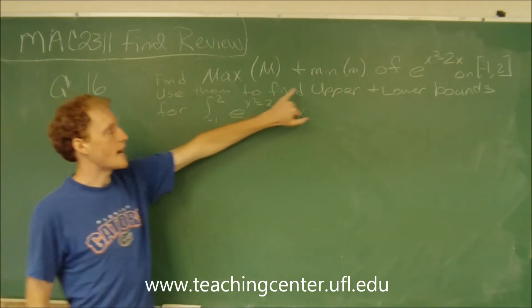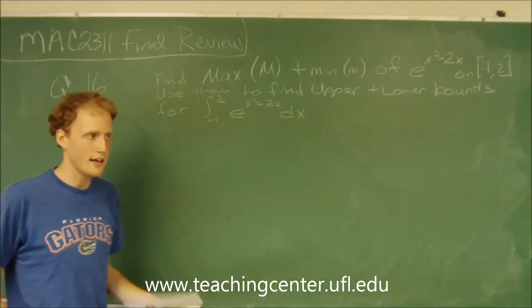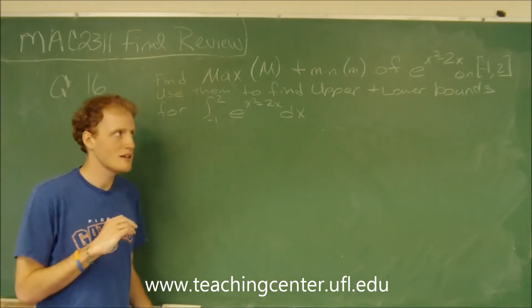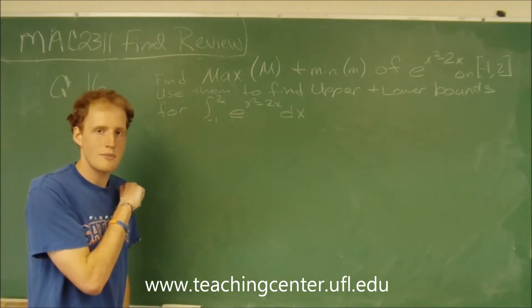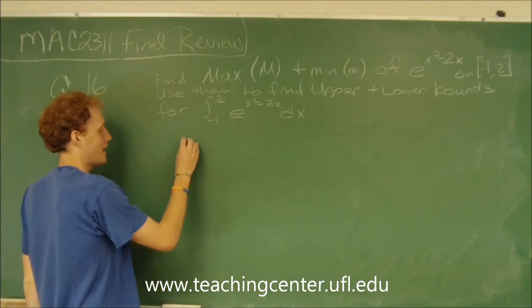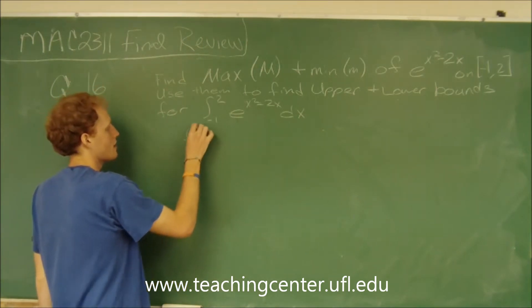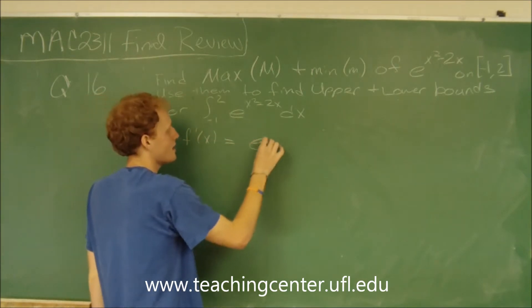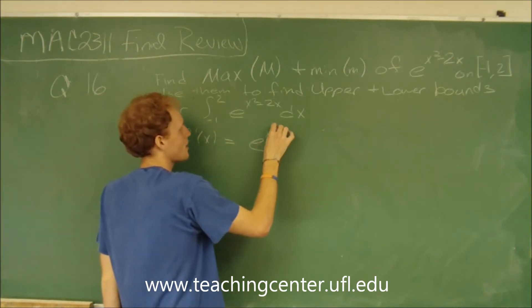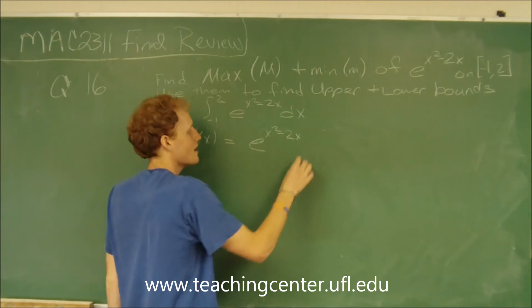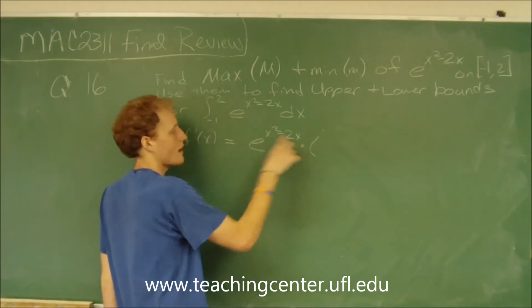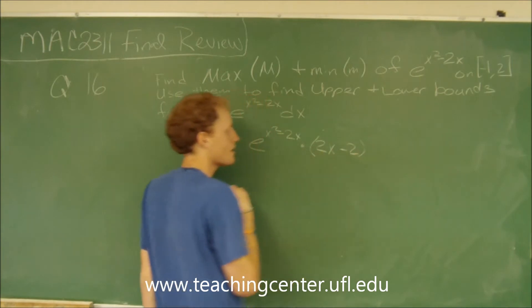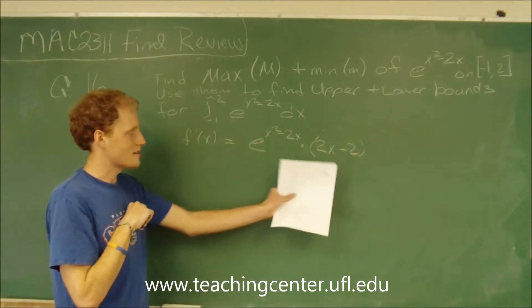We first need to find the maximum and minimum values. To find maxes and mins, we need the critical numbers. To find the critical numbers, we take the derivative. The derivative is going to equal e to the x squared minus 2x times the derivative of the inside, which is 2x minus 2. By chain rule, that's the derivative.